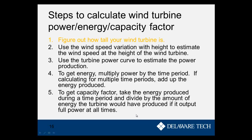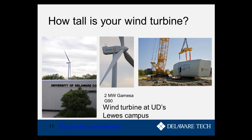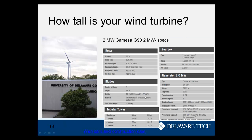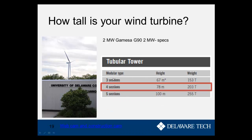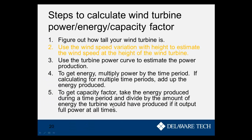Step one is to figure out how tall our wind turbine is. For this example we're running through a turbine installed at the University of Delaware Lewis campus — a two-megawatt Gamesa G90 wind turbine. Looking at the tubular tower specs, you can buy this turbine at different heights: three sections gives 67 meters, four sections gives 78 meters, and five sections gives 100 meters. They installed the four-section height at UD, so it's 78 meters tall. That's our hub height.